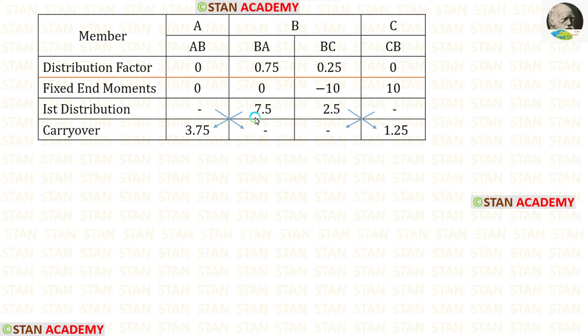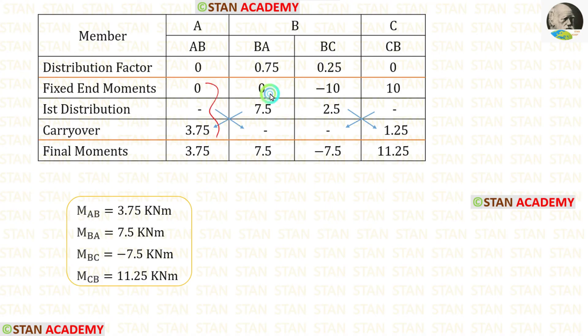Now let us do the carry-over. We divide the distributed values by 2 and enter the answers. In this analysis, we cannot continue further because in joint B there are no remaining values, so no further distribution is possible. We then add all values to find the final moments.